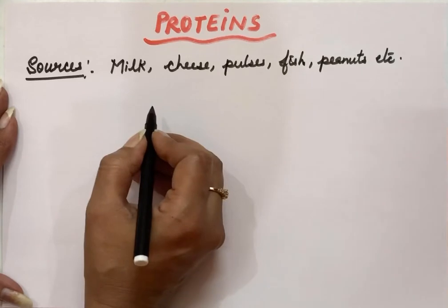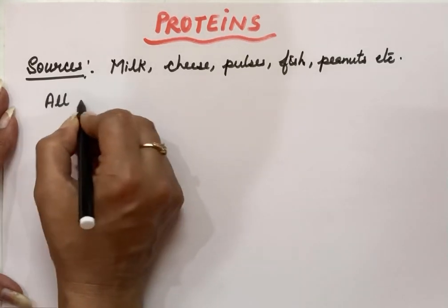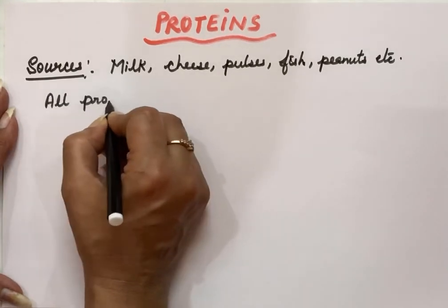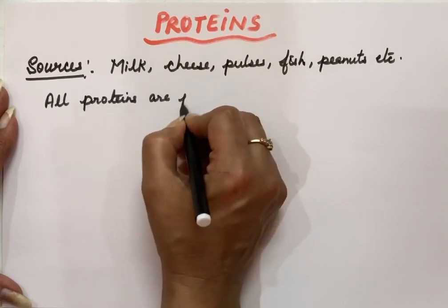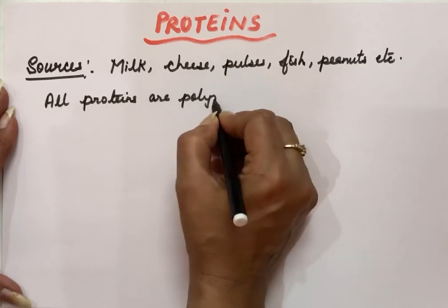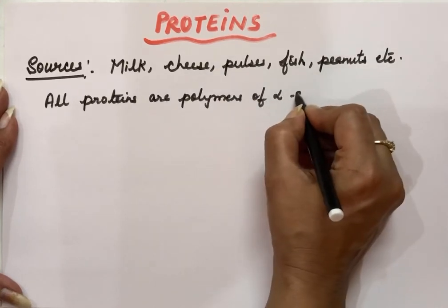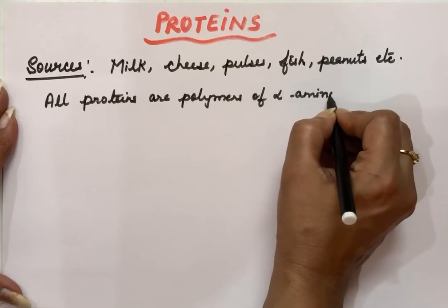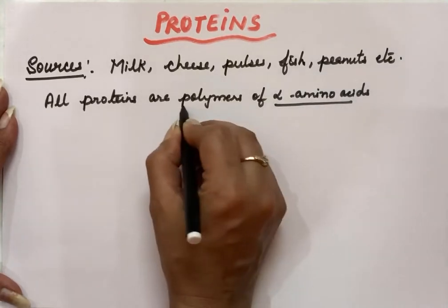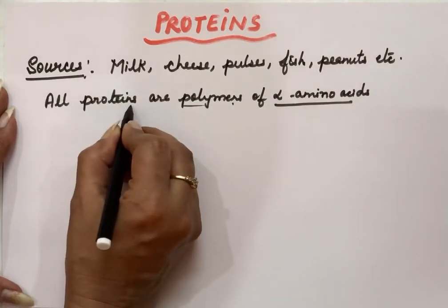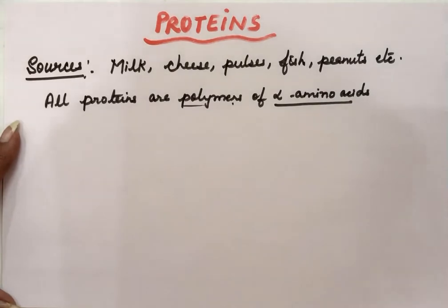These are some of the sources of proteins, and all proteins are actually polymers. Polymers means they are macromolecules, and they are the polymers of alpha amino acids. Alpha amino acids repeat again and again and form a polymer, and that polymer is known as a protein. So they are the polymers of alpha amino acids.